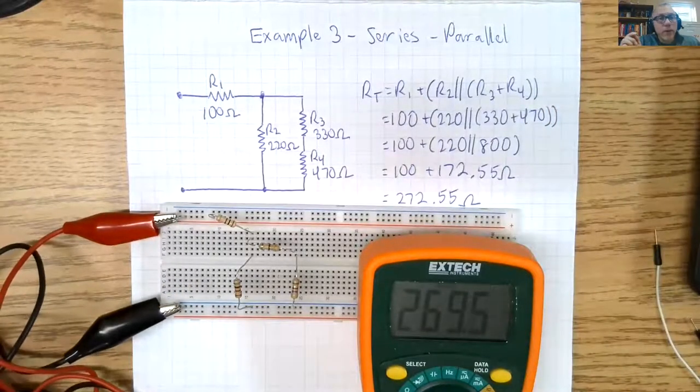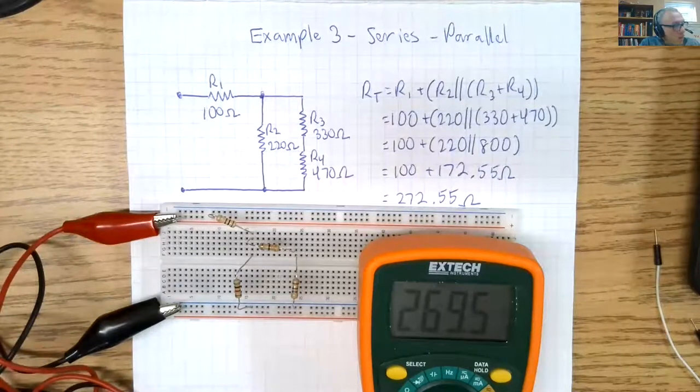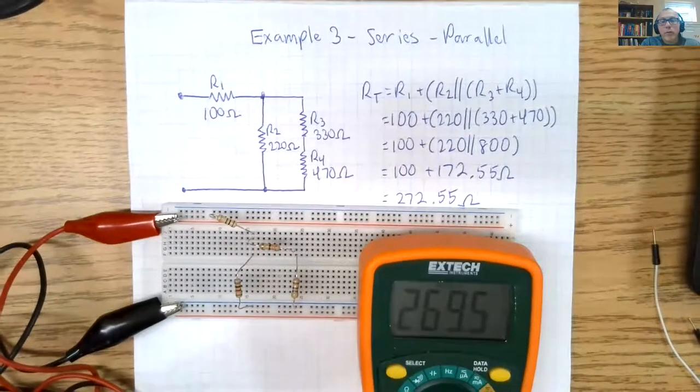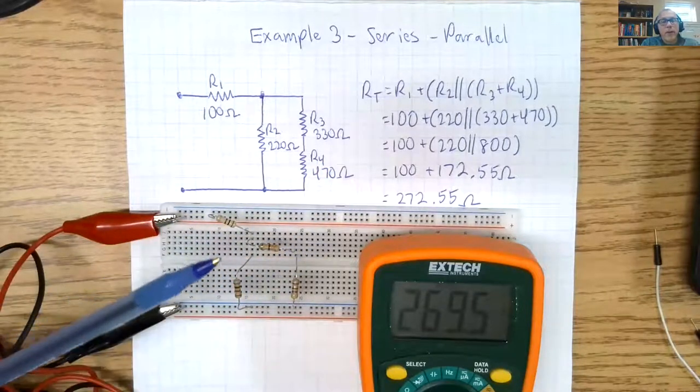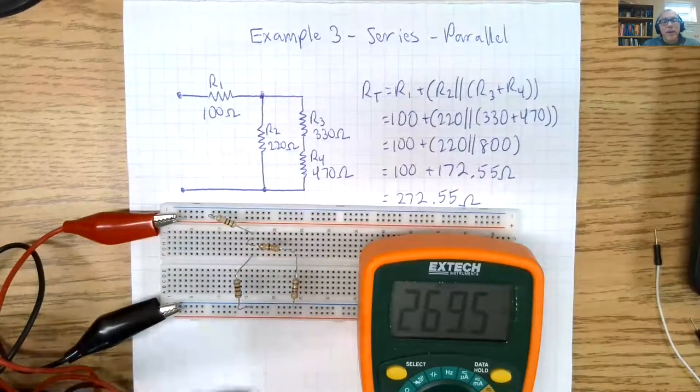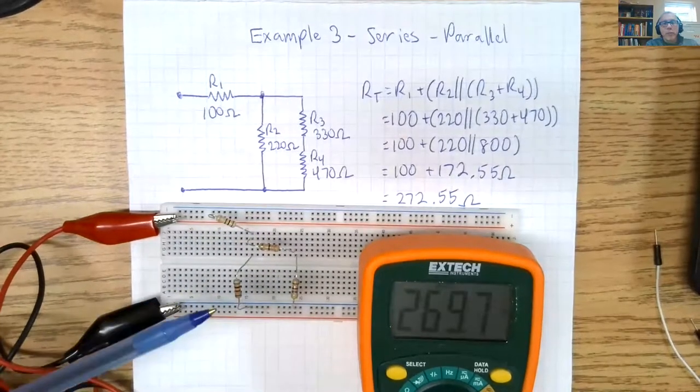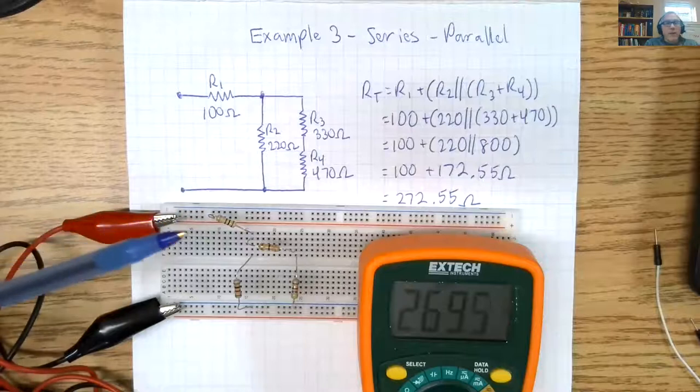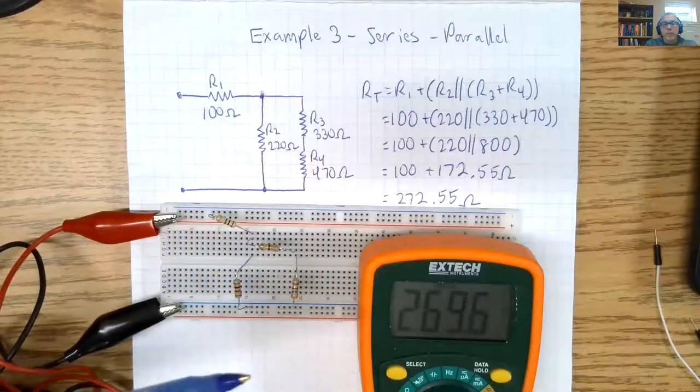So those are some examples of how we connect the series parallel circuit on a breadboard and how we confirm that is actually correct. So you need to do the calculation and you need to check it out. A lot of mistakes I see with my students is, one, connections. Two is the calculation. And three, they actually have the wrong resistor.